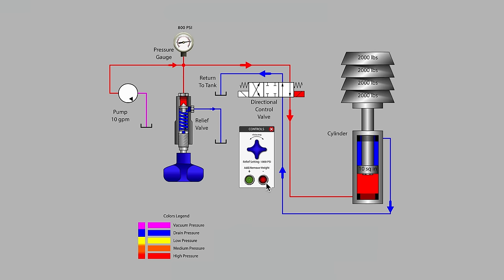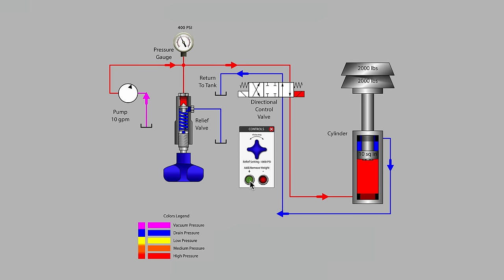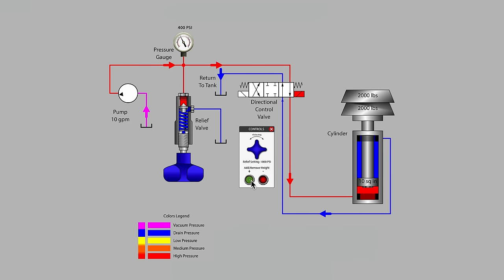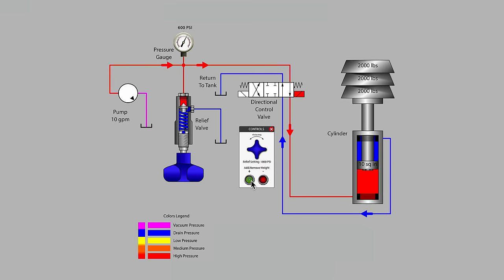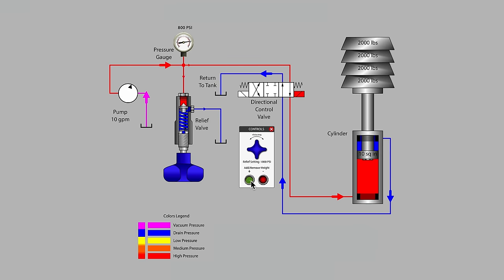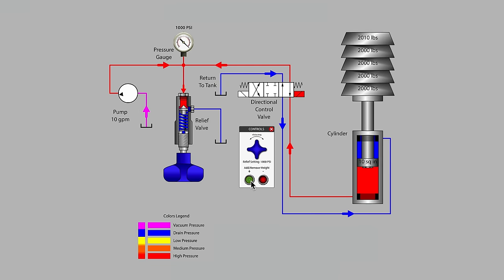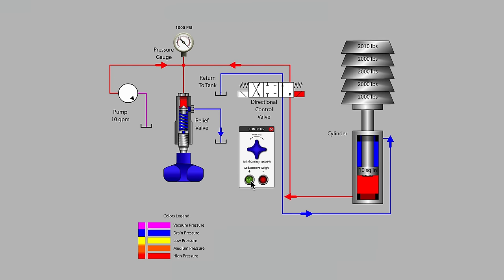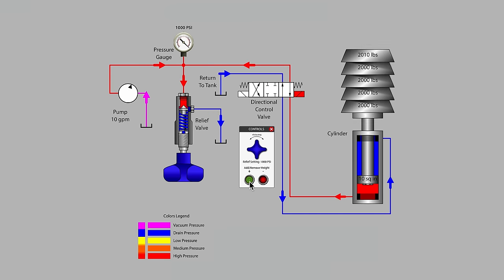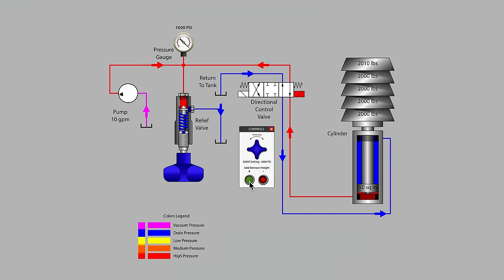In order to lift the system at maximum possible speed with an 800 pound load, the relief valve would have to be set a little higher than 1000 psi. In future videos, we will examine pressure override in more detail and look at more complex relief valve designs.